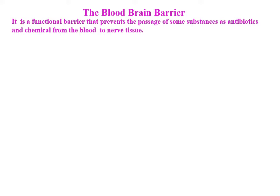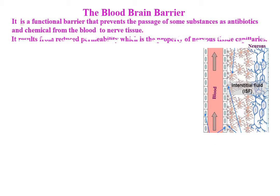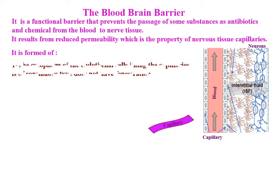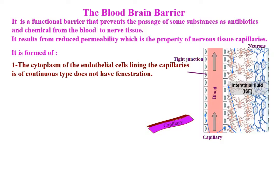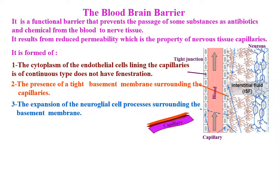The blood-brain barrier is a functional barrier that prevents the passage of some substances, such as antibiotics and chemicals, from the blood to nerve tissue. It results from the reduced permeability of nervous tissue capillaries. It is formed of the cytoplasm of endothelial cells lining the capillaries of a continuous type without fenestration, a tight basement membrane surrounding the capillaries, and the expansion of neuroglial cell processes surrounding the basement membrane.